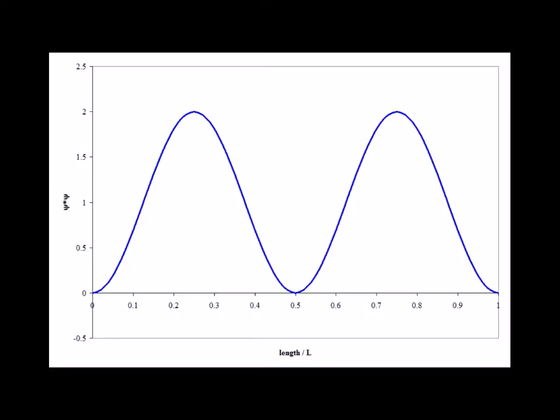Here is a graph of the probability density for the n equals 2 solution. Notice that it has two maxima: in the center of the left half of the box and in the center of the right half of the box.